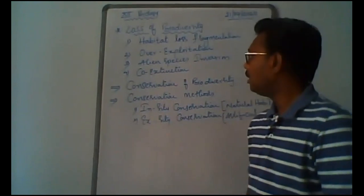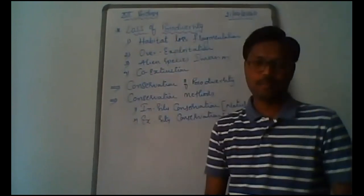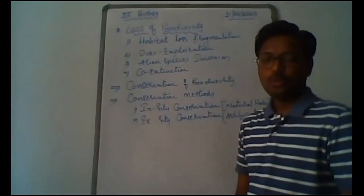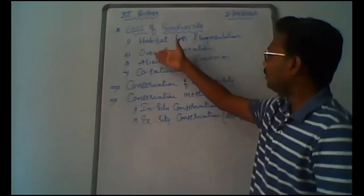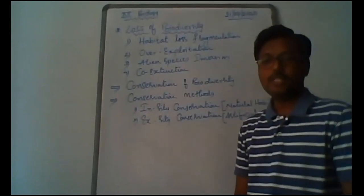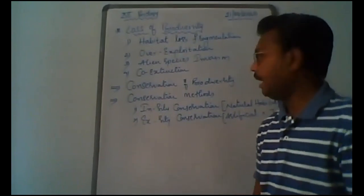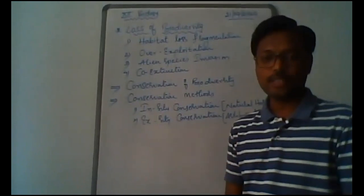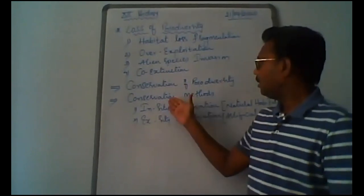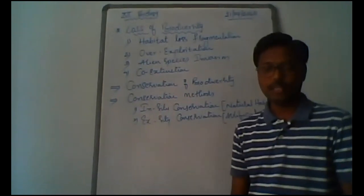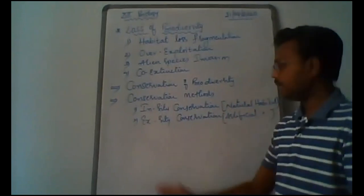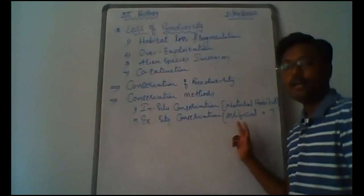Today we will discuss the next topic: loss of biodiversity. We will understand this through four important causes — habitat loss and fragmentation, overexploitation, alien species invasion, and co-extinction. Then we will move to conservation of biodiversity, its importance, and the two methods: in-situ conservation in natural habitats, and ex-situ conservation in artificial habitats.